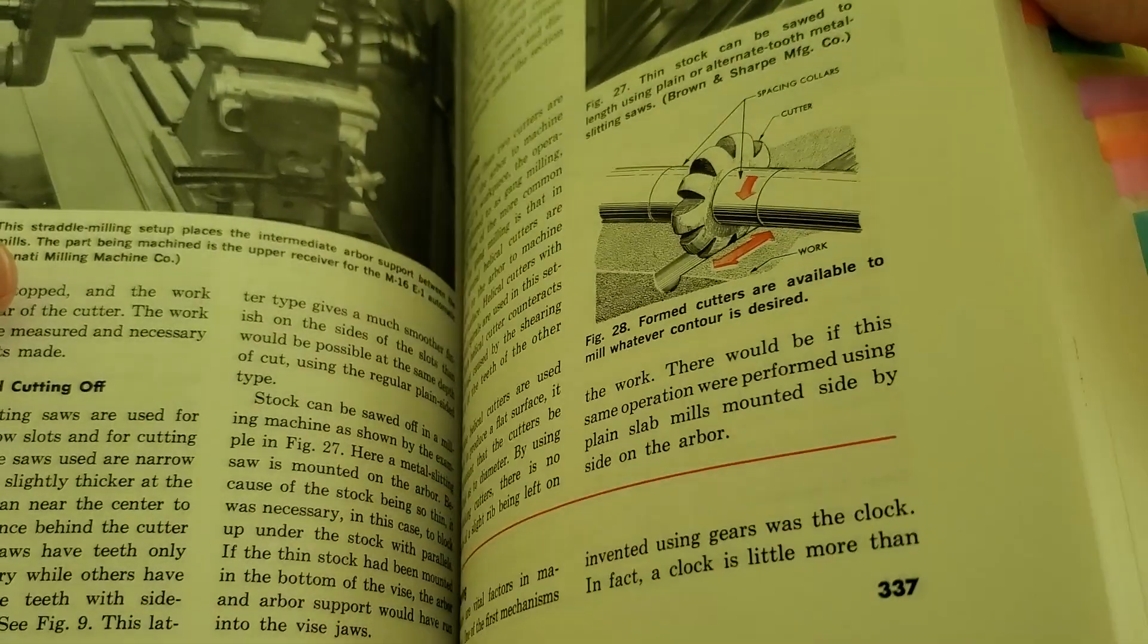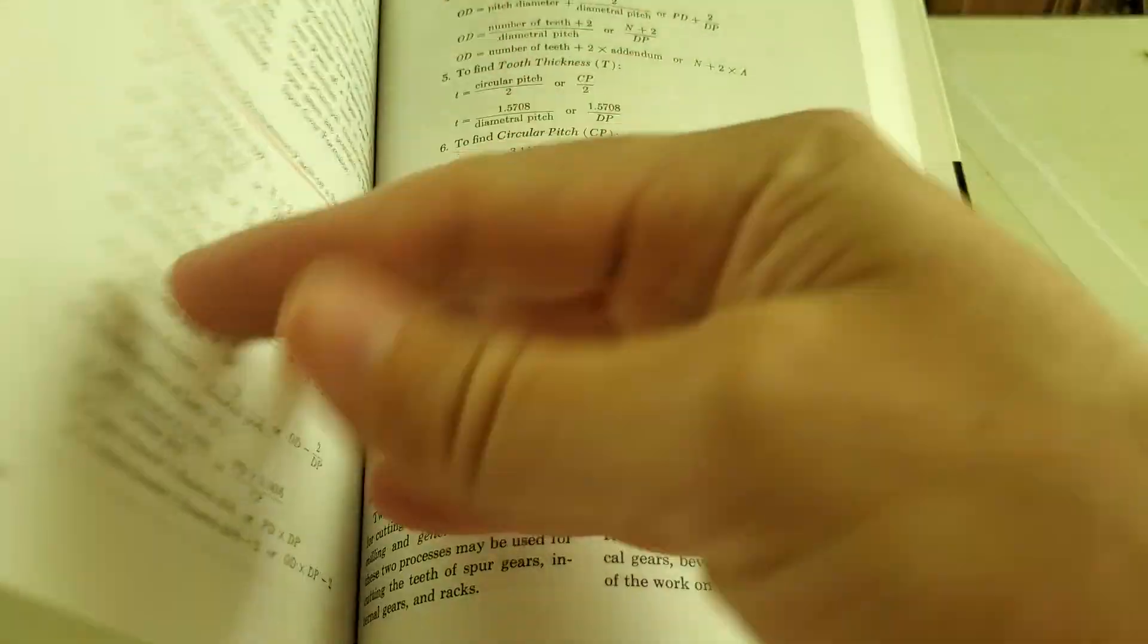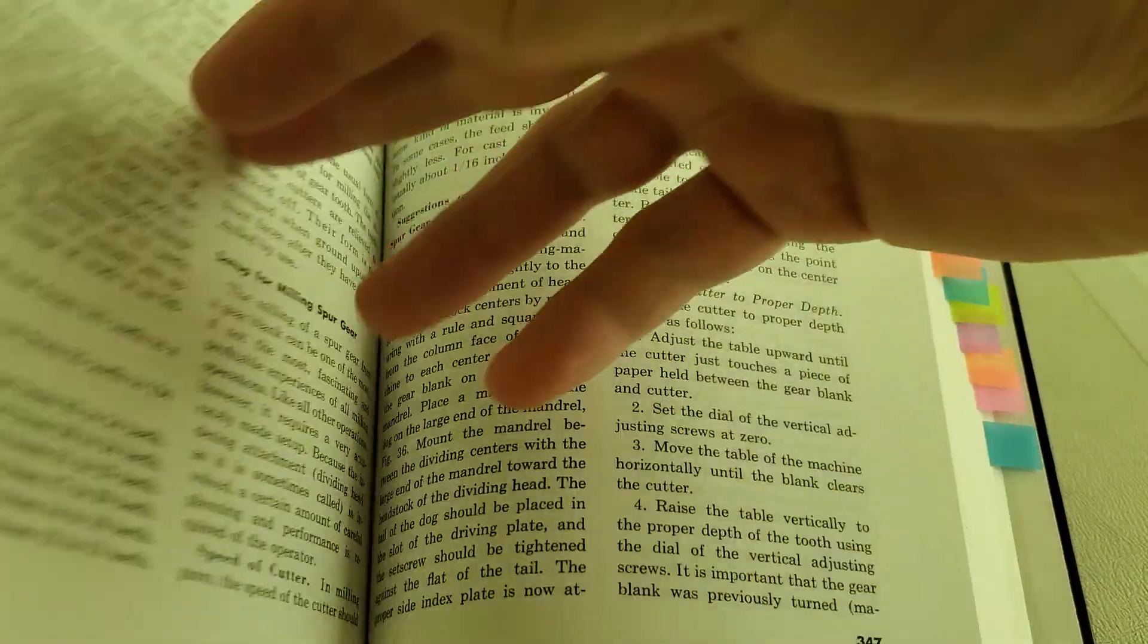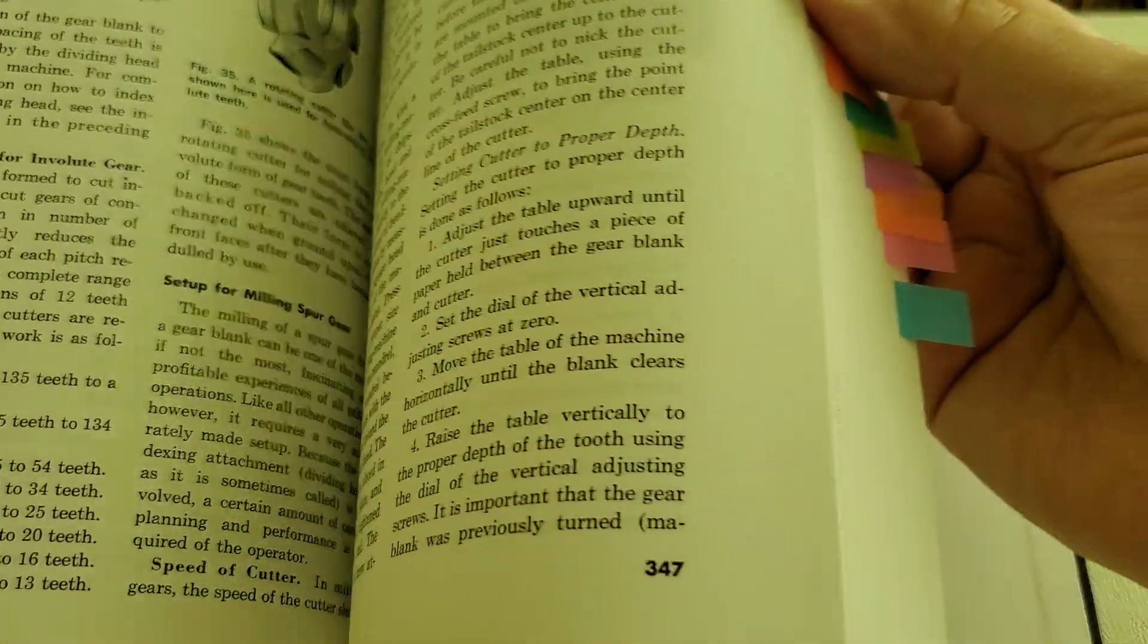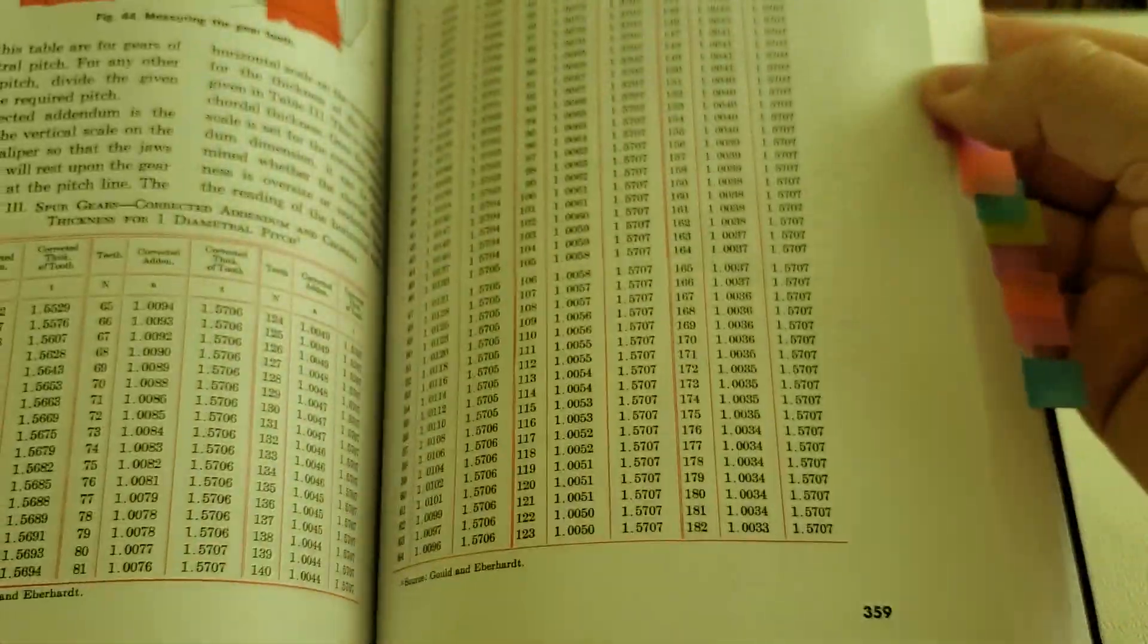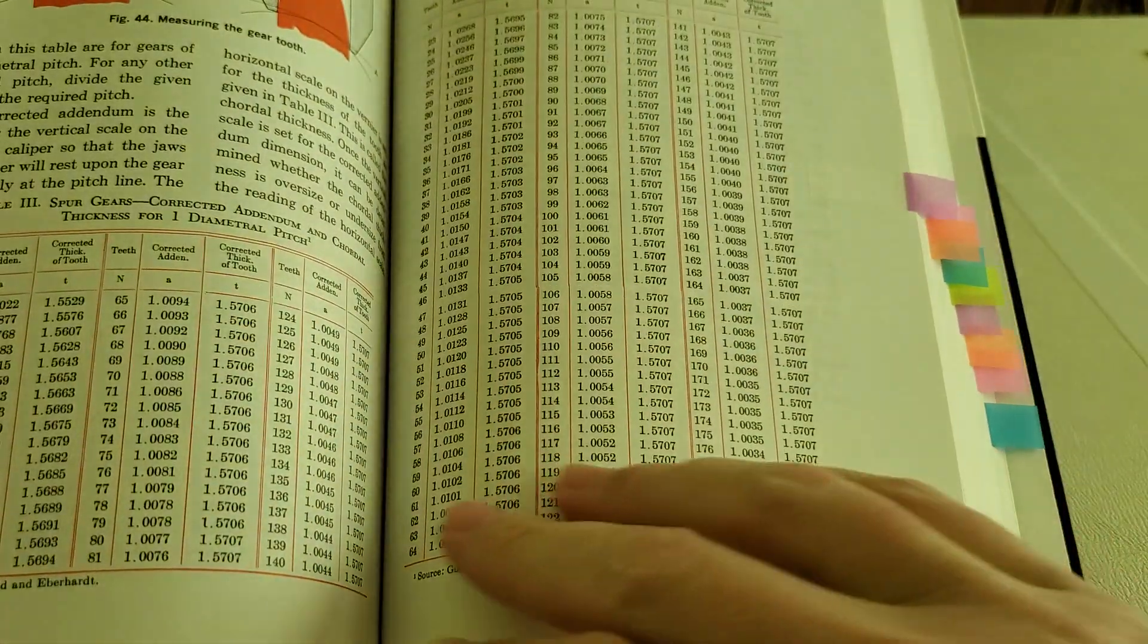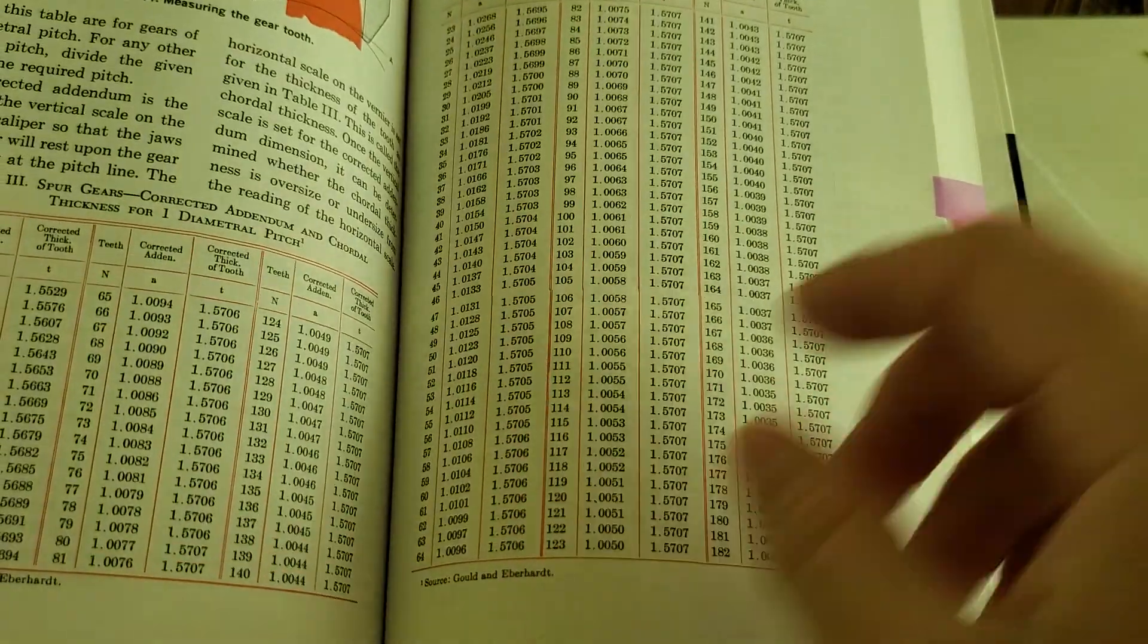And there's actually about 20 pages back here that covers gears and gear cutting, including all the math, lots of charts. Pretty nice to have. So even back here, these are all sorts of different dimensions for common gears. That's really, really neat.